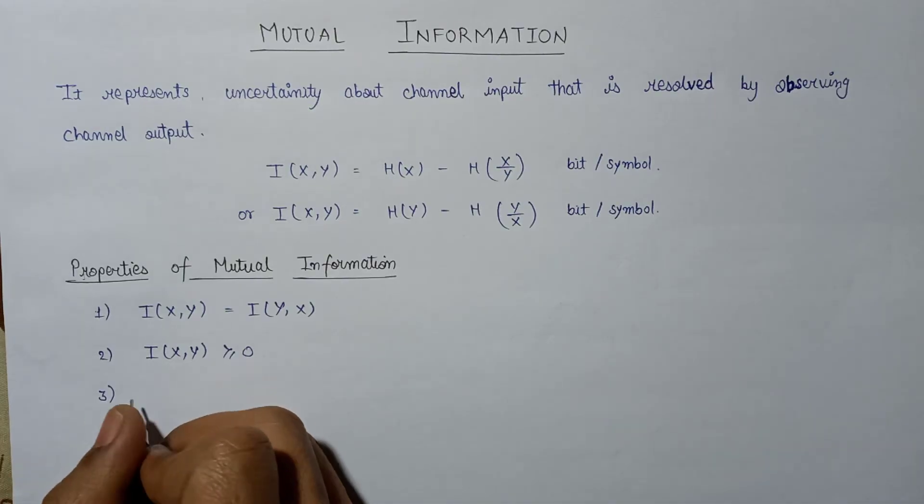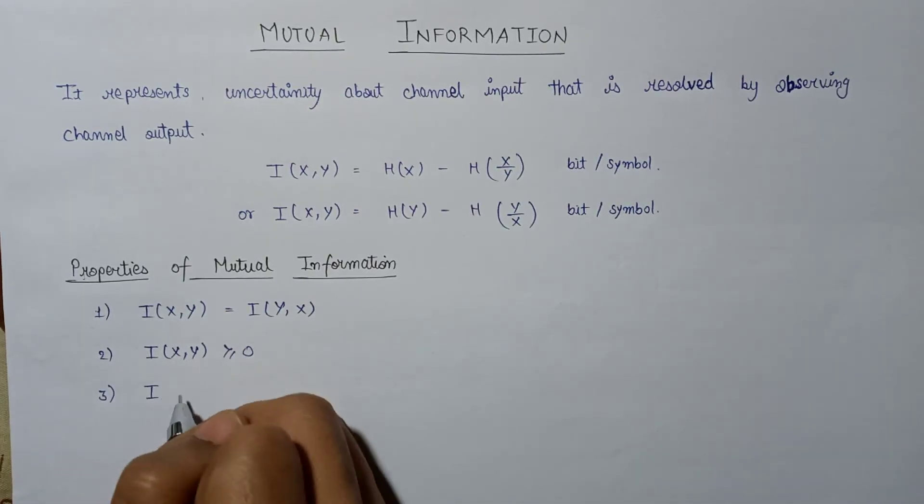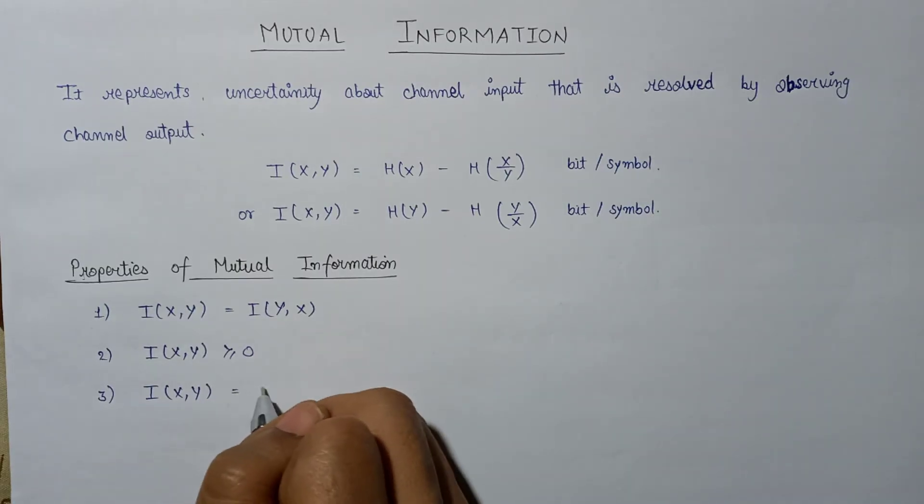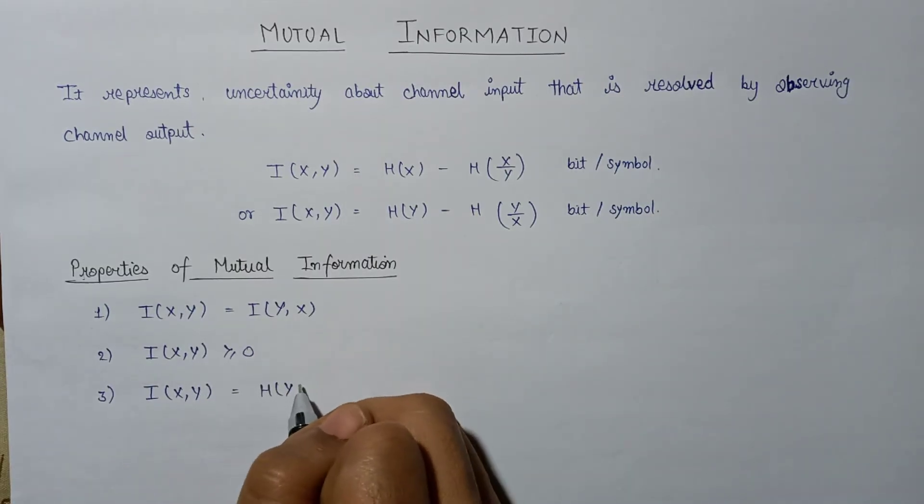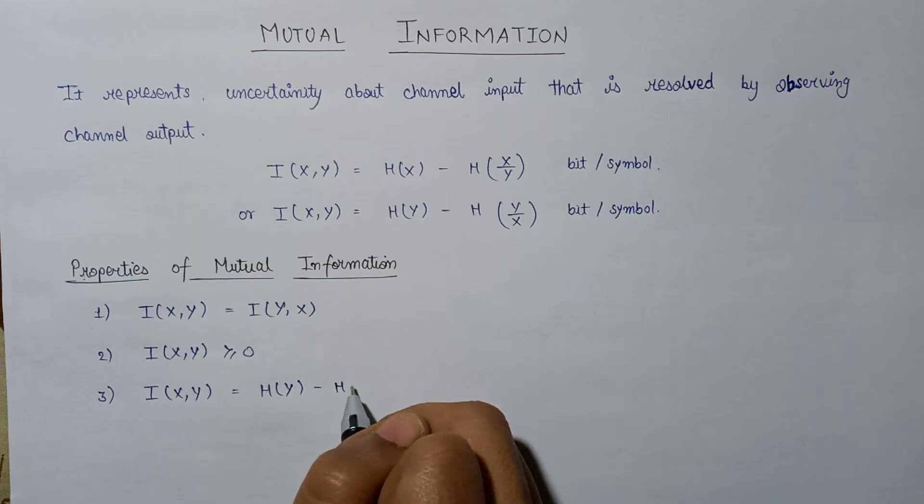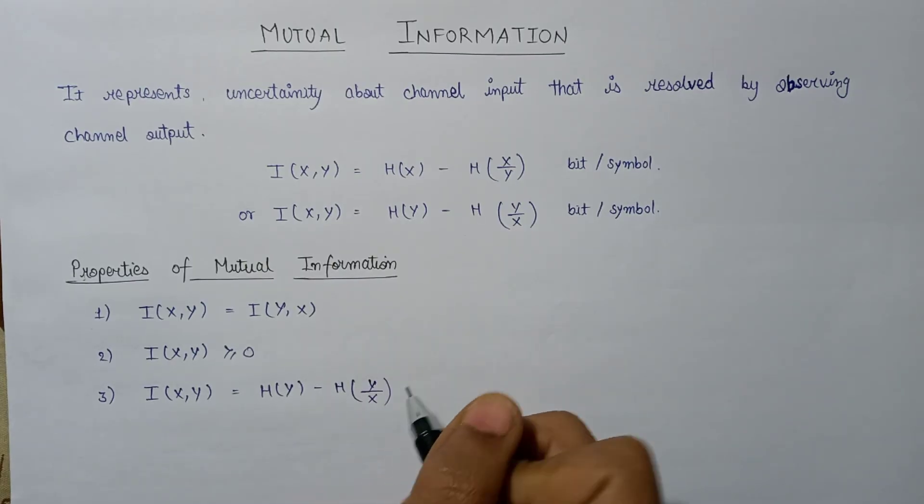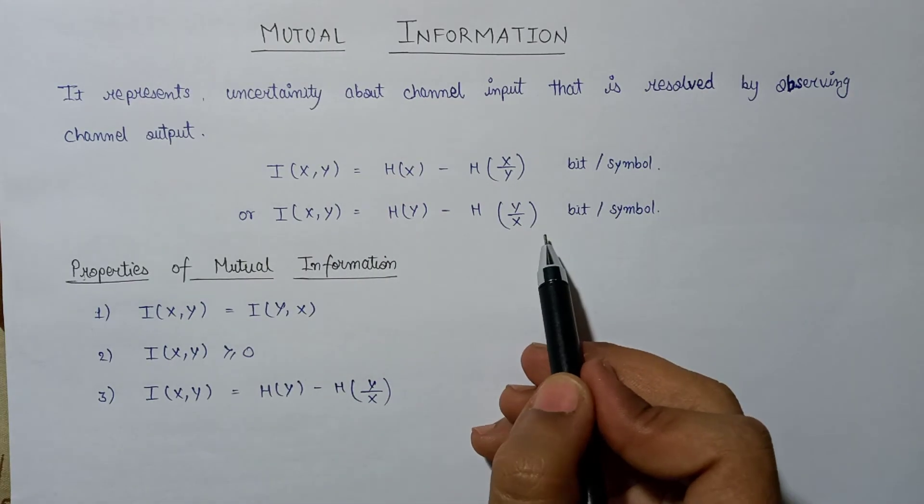The third property of the mutual information says that I(x,y) equals H(y) minus H(y|x), that is this property that we discussed.